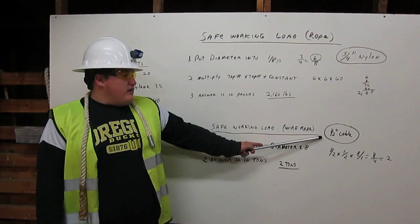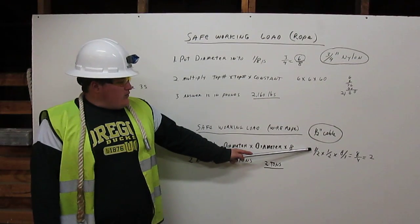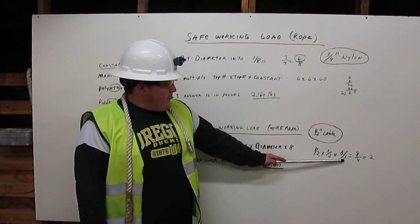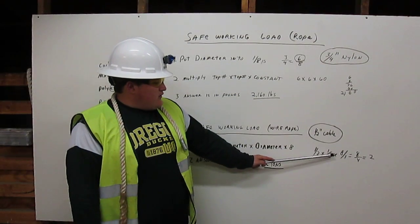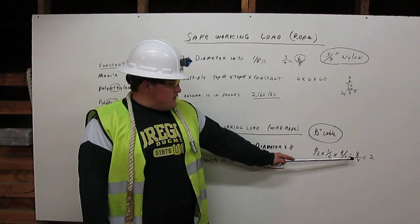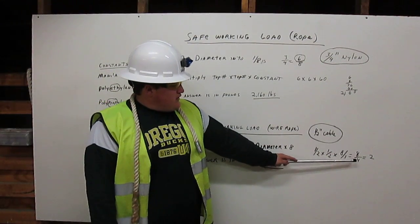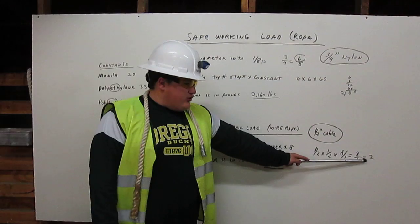In this example, it is a half inch. So you take one half times one half times eight over one. Or one times one times eight equals eight. Then two times two times one equals four. Eight over four also equals two.